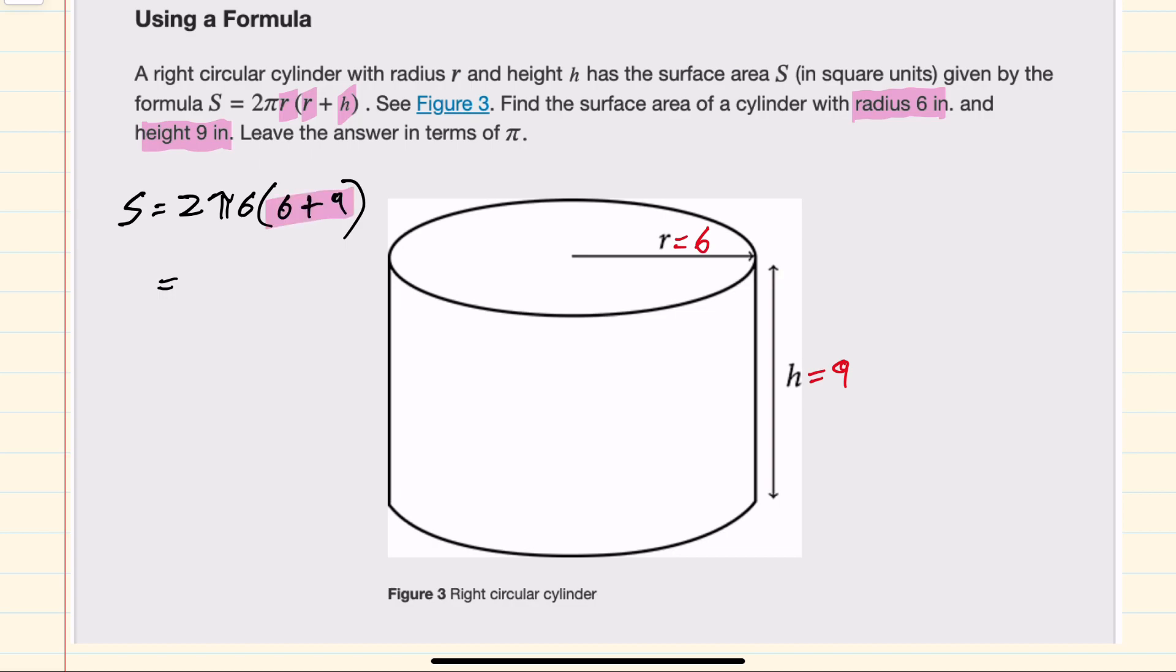we would need to evaluate inside the parentheses first. So this would be 2π(6) times 15. Now with just multiplication, we can multiply all of the numerical pieces first.